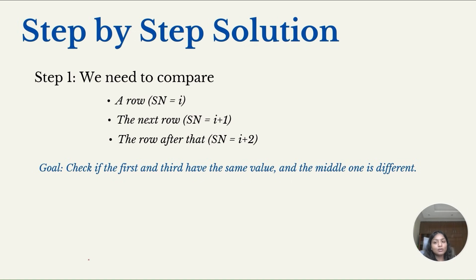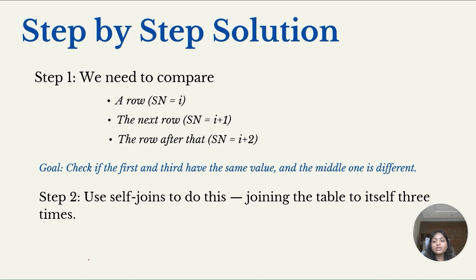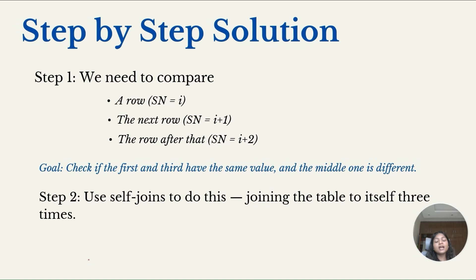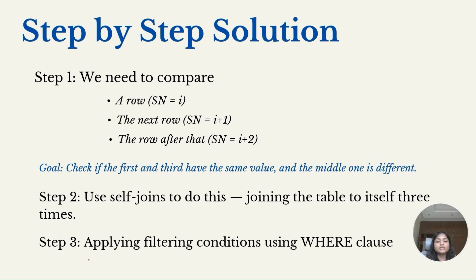So we need to check if the first and third rows have the same value while the middle row has a different value. Our second step is to use self-joins to do this comparison, since we need to compare three consecutive rows. We'll be joining the table to itself three times. In step three, we'll apply the filtering conditions using the WHERE clause.